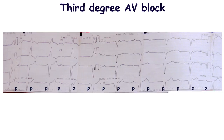Sometimes, in the case of third degree AV block, isorhythmic AV dissociation occurs. In this case, it seems that the P waves and the QRS complexes have a relationship, but a long rhythm strip may help to make the right diagnosis.